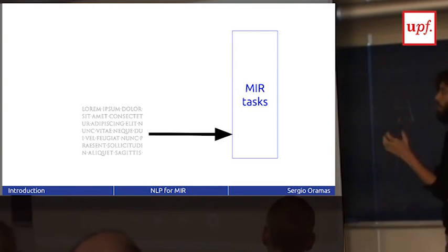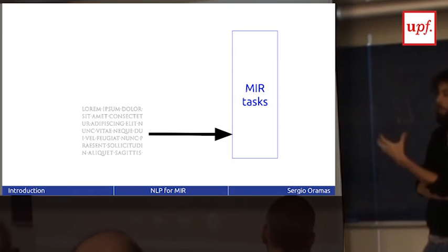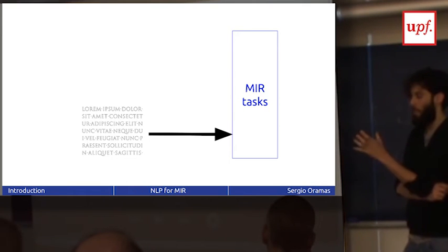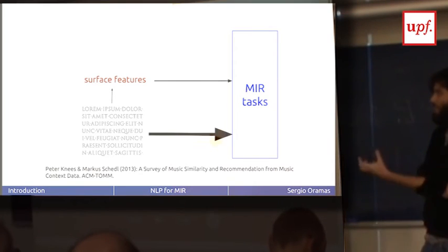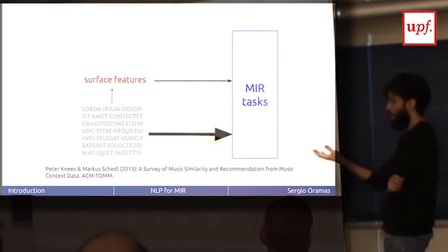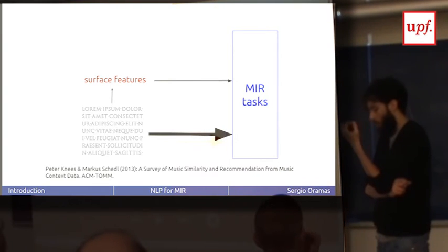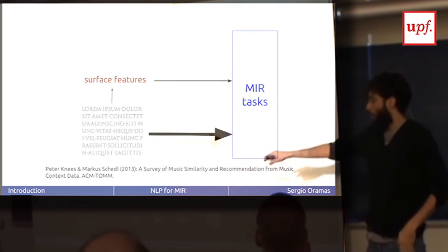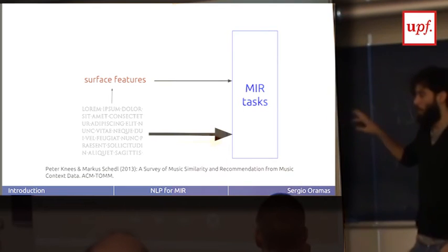So what about text? We can also use text in MIR — we can take the raw text, count the words, and use these in a MIR task. We can also get surface features from the text, like part-of-speech tags or other surface features, and use those for the task. There have been many papers in MIR using these approaches — vector space models, part-of-speech tags, and co-occurrence — but we are not focused on these in this tutorial, as this has already been done.